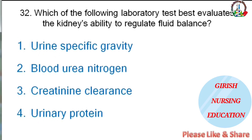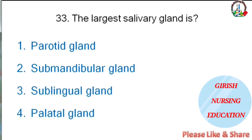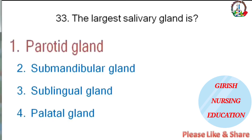Which laboratory test best evaluates the kidney's ability to regulate fluid balance — urine specific gravity, blood urea nitrogen, creatinine clearance, or urinary protein? The correct answer is creatinine clearance. The largest salivary gland — parotid gland, submandibular gland, lingual gland, or parietal gland? The correct answer is parotid gland.